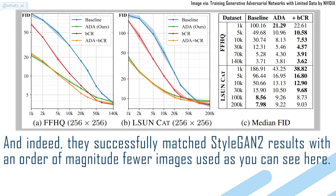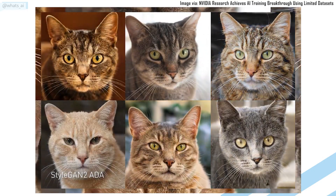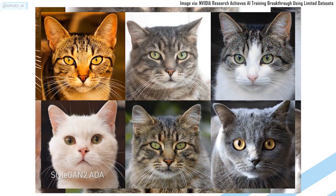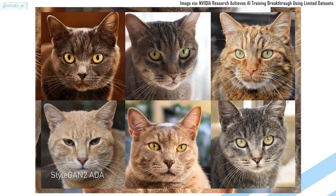And indeed, they successfully matched StyleGAN2 results with an order of magnitude fewer images used, as you can see here, where the results are plotted for 1,000 to 140,000 training examples using the same FID measure on the FFHQ dataset. Of course, the code is also completely available and easy to implement into your GAN architecture using TensorFlow.